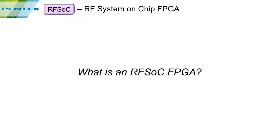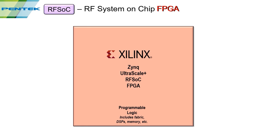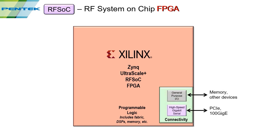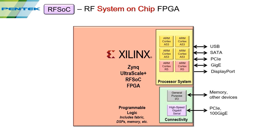So what is an RFSOC? The FPGA part is based on UltraScale+ fabric, containing programmable logic, DSPs, memory, and high-speed interfaces. The system-on-chip component includes a processor subsystem with six ARM processors and a range of peripherals including USB, SATA, PCIe, and 1GigE. The RF part consists of the data converters: eight ADCs at 4 GHz and 12 bits, and eight DACs at 6.4 GHz with 14-bit resolution.